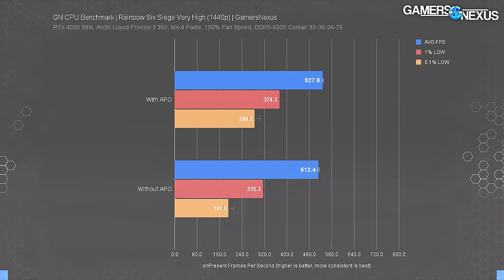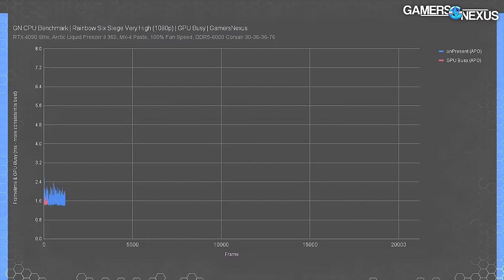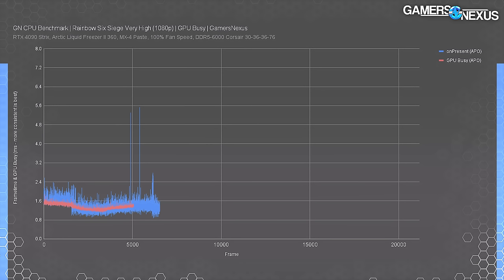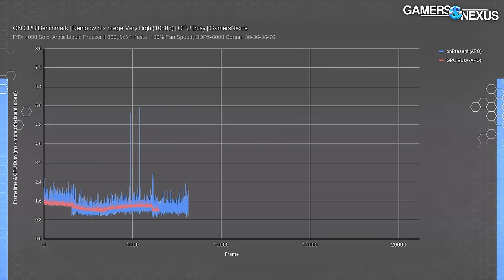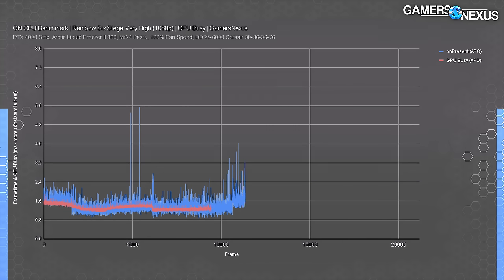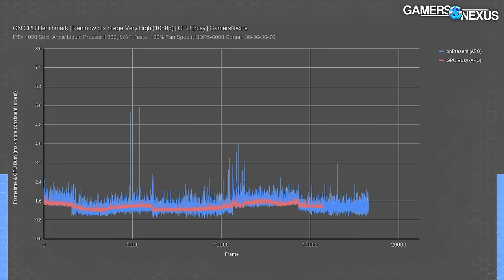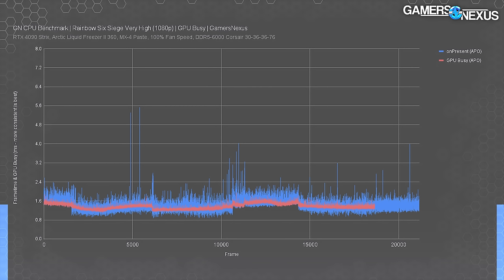Just to be sure, we can further prove that with GPU Busy — a metric we've been pushing lately. This shows the amount of time per frame that the GPU is spending working. A lower busy time means less GPU load. In this plot of the 1080p results, we can see that the GPU is typically at a 1-to-1 or very close with the total frame time, meaning the GPU is busy for nearly the entire frame rendering process. So we're primarily GPU bound when APO is enabled at 1080p very high — that's at least partly why we're not seeing additional scaling like we saw with Metro.